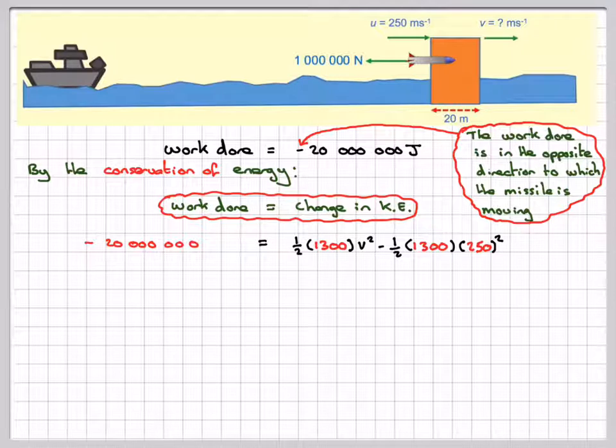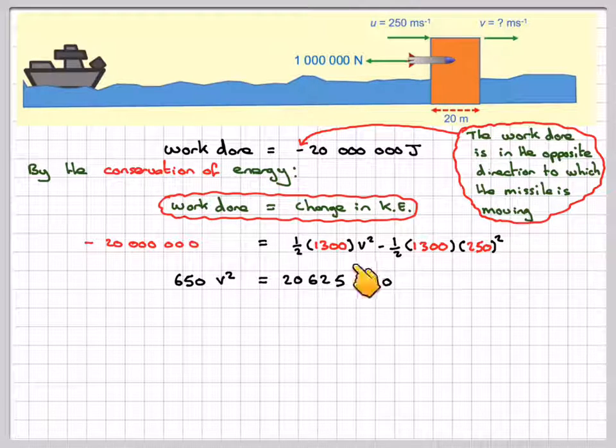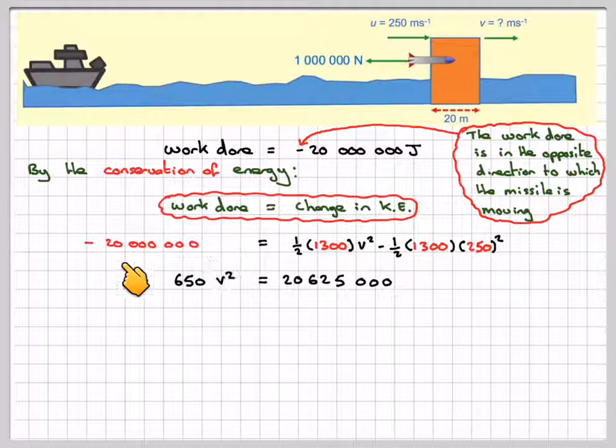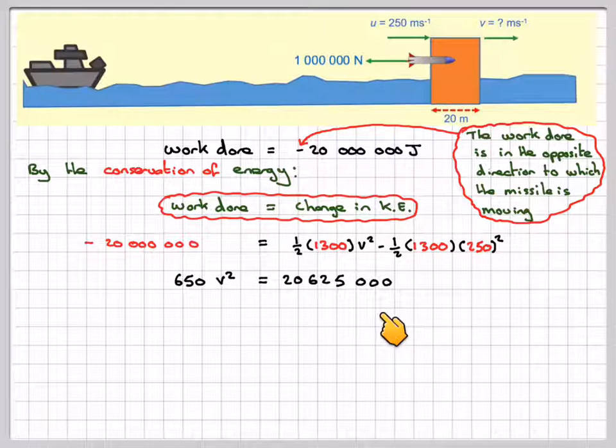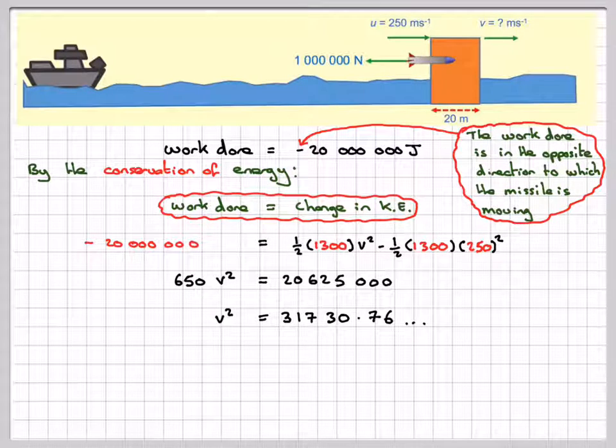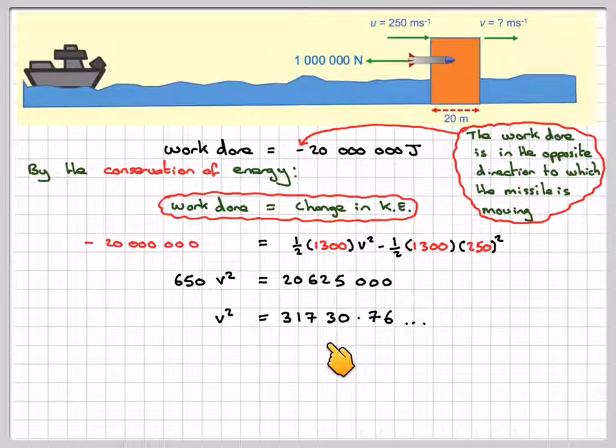Doing these calculations, we get 650v². If we work this out, ½ times 1,300 times 250², and take it over and subtract 20 million, we get 20,625,000. Dividing through by 650, we get v² equals 31,730.76.